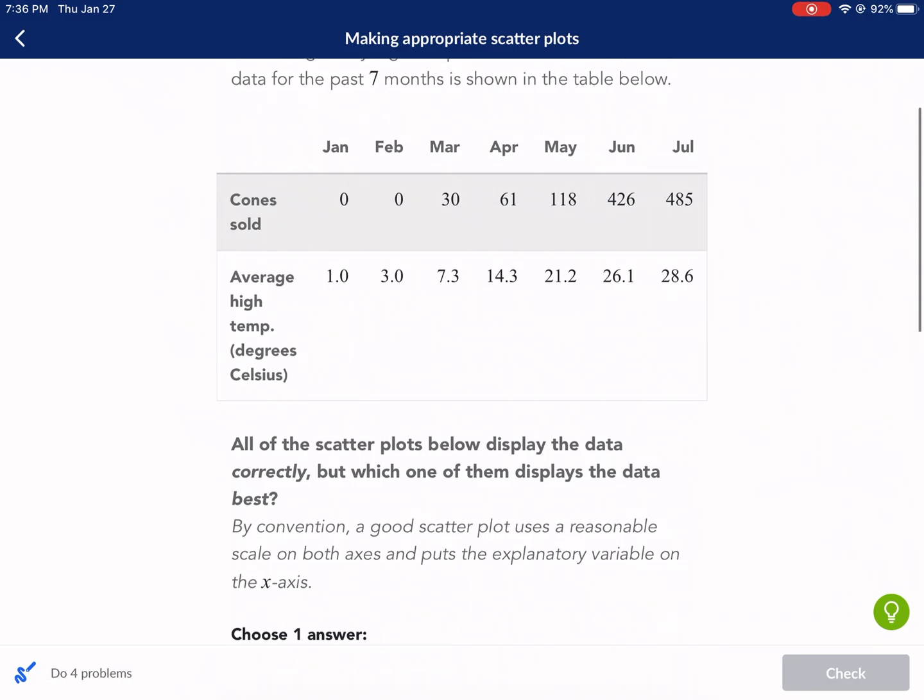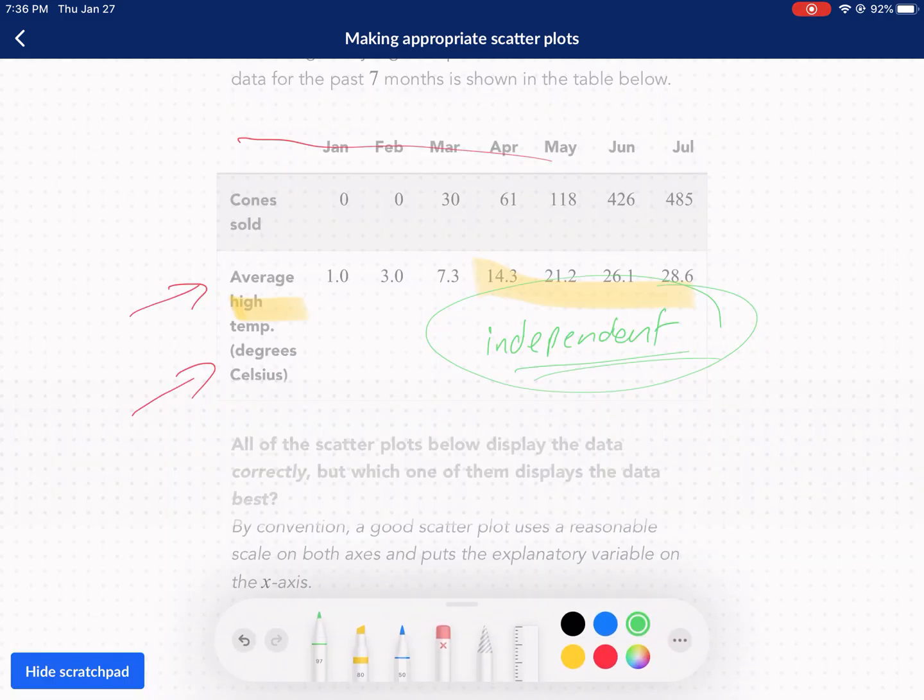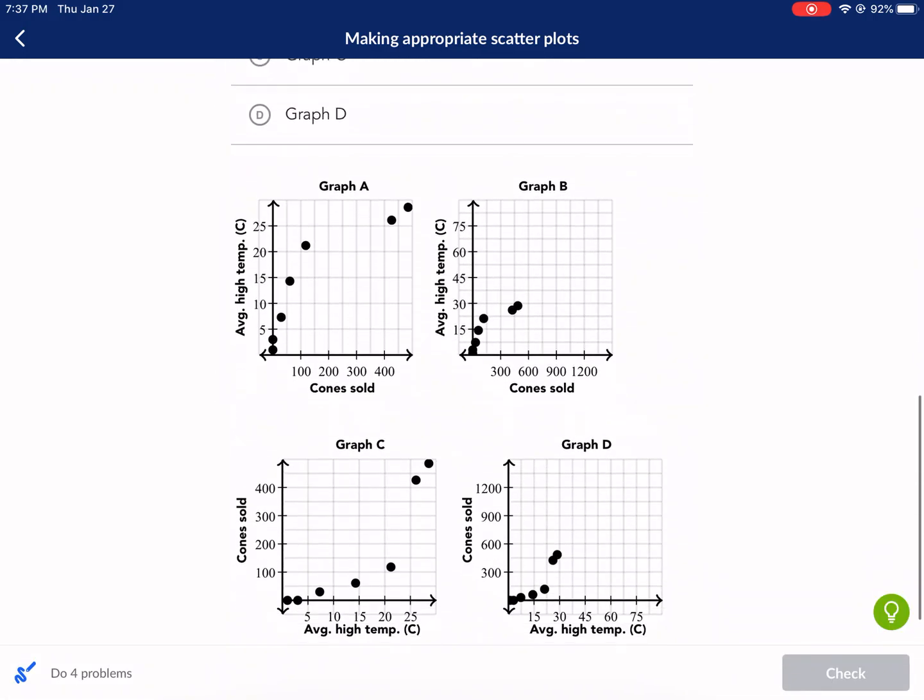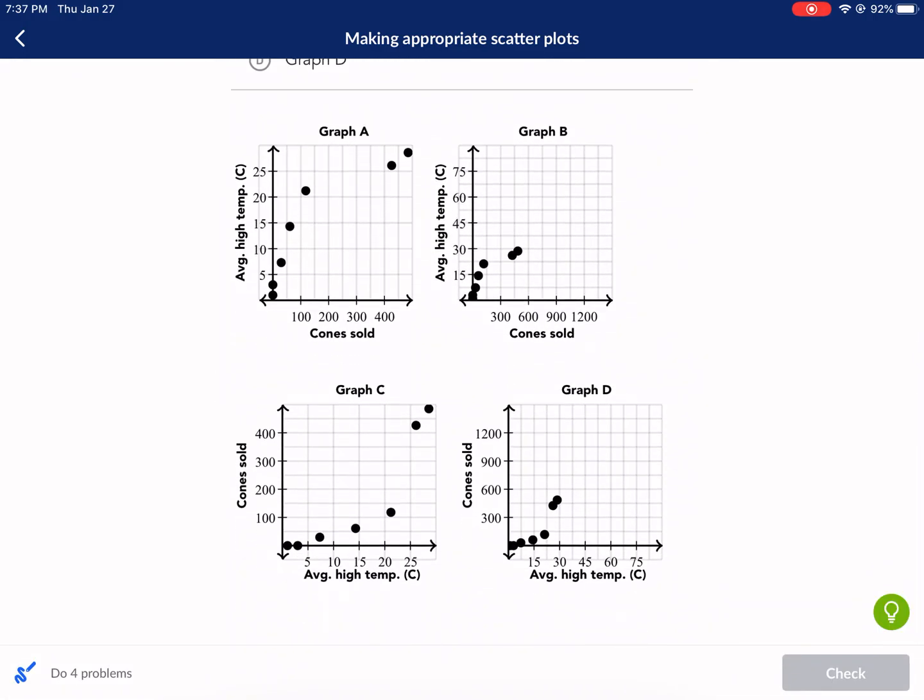So if we're looking at cones and the temperature, the thing that's dependent upon the other - obviously it's not like the temperature is going to change based on the number of ice cream cones sold. The temperature is going to be the temperature no matter what, and the cones sold will be dependent upon the independent variable which in this case is going to be the average temperature. There's nothing that controls the temperature.